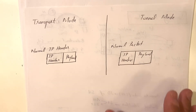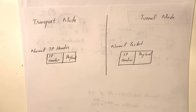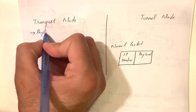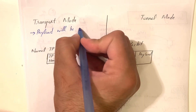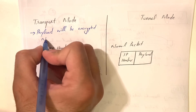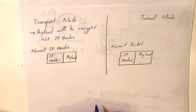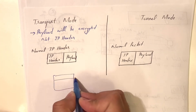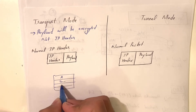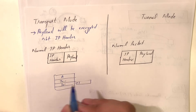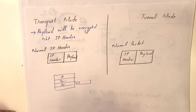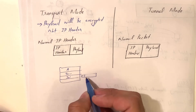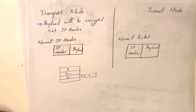The main difference between transport mode and tunneling mode is: in transport mode, we only encrypt the payload — the actual data — while the IP header, which includes the source and destination IP address, remains unencrypted. IPsec operates at the internet layer, and in transport mode only the payload is encrypted, not the IP header.